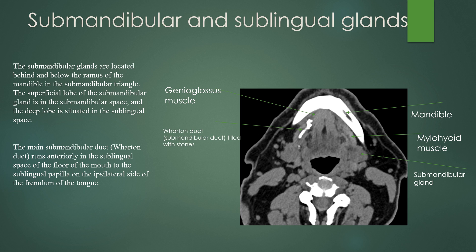The submandibular glands are located behind and below the ramus of the mandible in the submandibular triangle. The superficial lobe is in the submandibular space, but the deep lobe is considered to be within the sublingual space. The main submandibular duct, aka Wharton's duct, runs anteriorly in the sublingual space in the floor of mouth to the sublingual papilla on the ipsilateral side of the frenulum of the tongue. Here are stones filling Wharton's duct, outlining it well. This is the genioglossus muscle, the mylohyoid muscle, and the mandible where the muscles attach anterior to where Wharton's duct will come out.